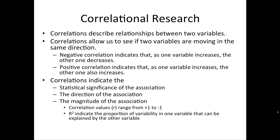Correlations tell you the statistical significance of the association — whether the finding we're seeing is real or could have happened just by chance. Correlations also indicate the direction of the association — whether it's negative or positive — and the magnitude of the association. Correlation values range from positive one to negative one and tell you how big an association is. We can also convert that by squaring it to an r-squared value, which indicates the proportion of variability in one variable that can be explained by the other.